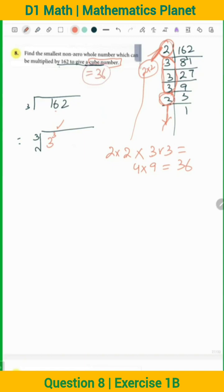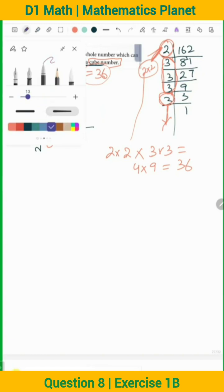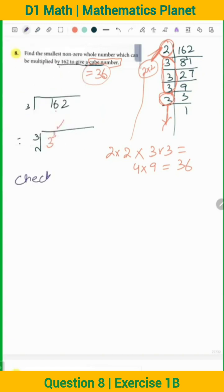Now let's check this answer. Multiply 162 by 36. Did you get 5832? Yes, 5832.